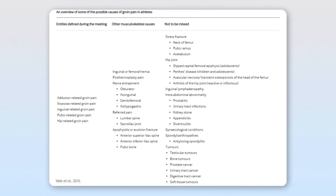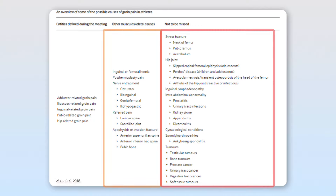Whilst the experts came up with definitions specifically for the five different types of groin pain, they also highlighted many other conditions at the hip that need to be screened for — complex ones that medical professionals will often diagnose rather than physiotherapists. The key takeaway from the Doha Agreement is that we have clear terminology for those five different types of groin pain that will come up in athletes most commonly, which is really useful for differential diagnosis.